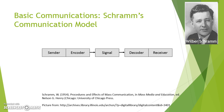This communication model starts with a sender — the person who has a message to send. We're going to call that message the signal, and it ends with the receiver. The sender encodes that message in some way: it could be verbally, through written word, or through singing — however the sender decides to encode that signal they want to send to the receiver. The receiver then has to decode that signal in order to understand what the sender is trying to communicate.